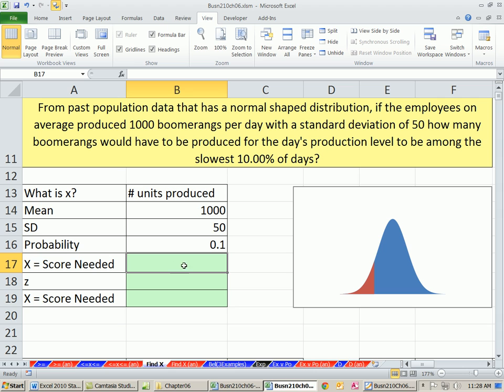We have X as number of units produced. Our mean is 1,000. In this case, we're talking about the low end. All the probability up to this point is 10%. The cumulative probability is what these functions always use.